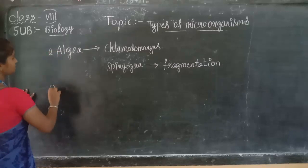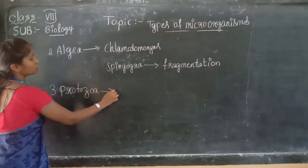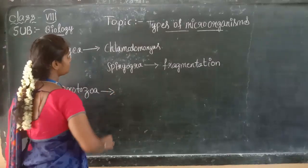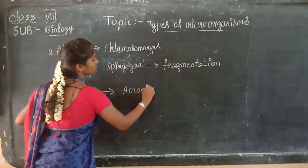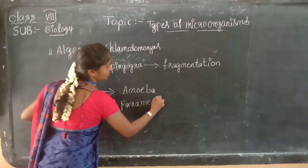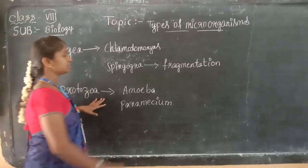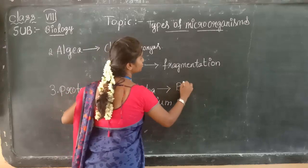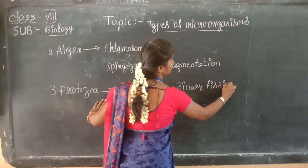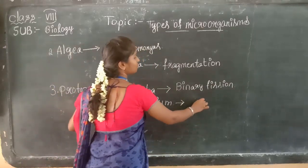One more type we also discussed is the protozoa. What are the examples of protozoa? Examples for protozoa are amoeba and paramecium. While the amoeba wants to divide, it is going to divide by the help of binary fission. The paramecium is also going to take the help of binary fission only.